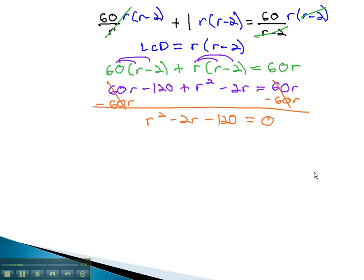We can now solve this by either the quadratic formula, completing the square, or factoring. Let's factor this equation to r minus 12, times r plus 10, equals 0.